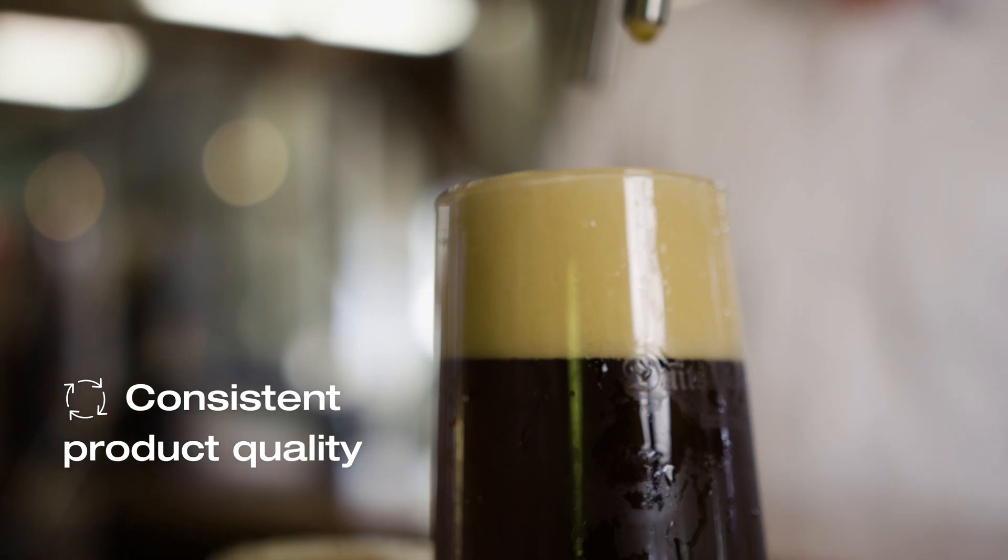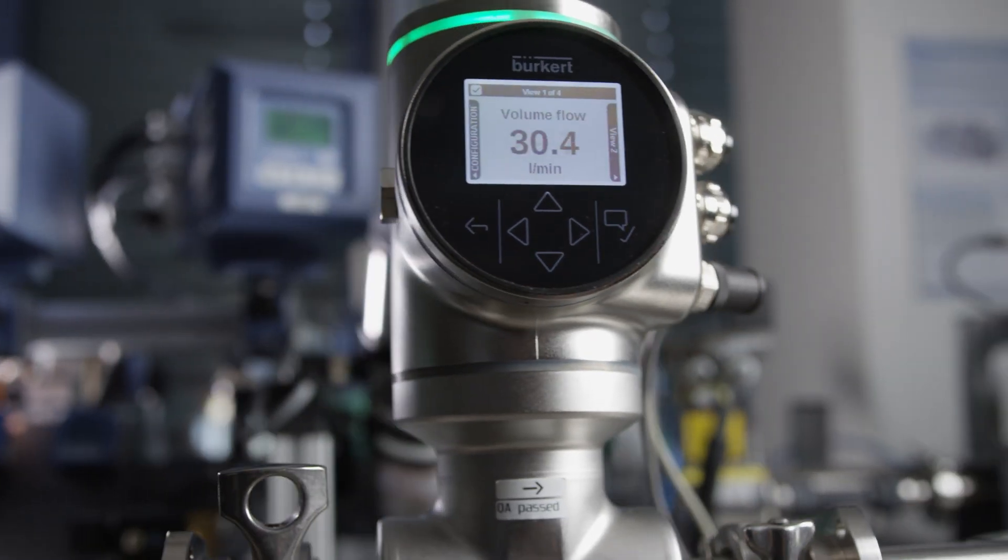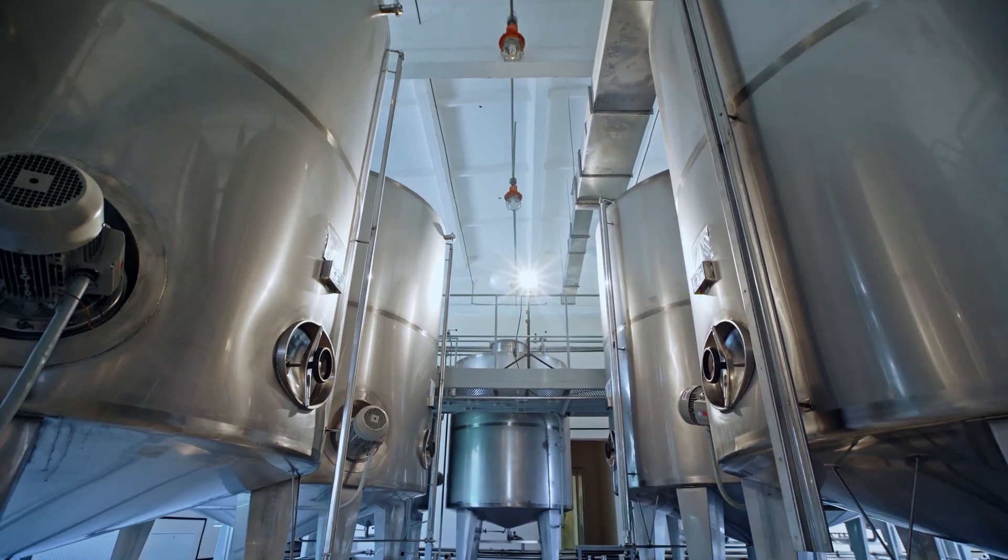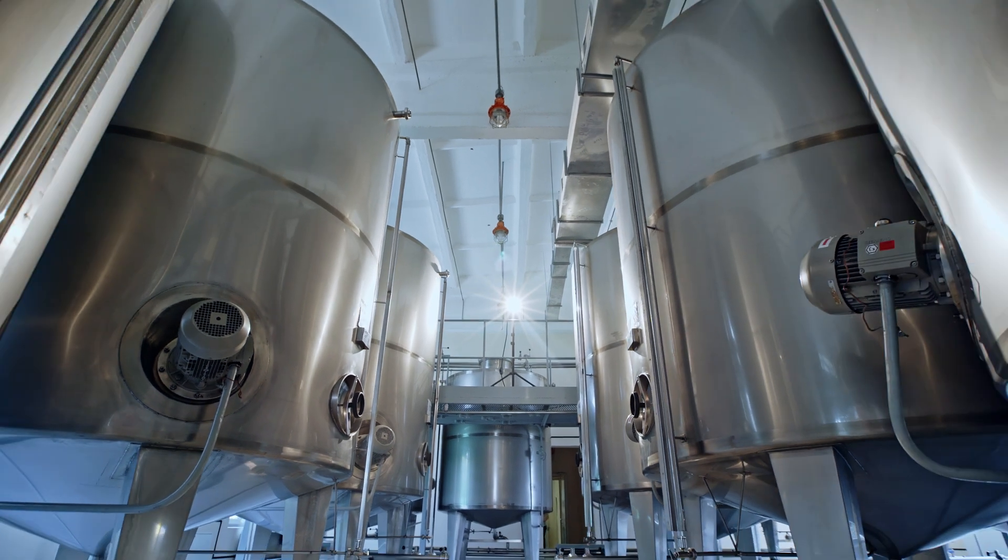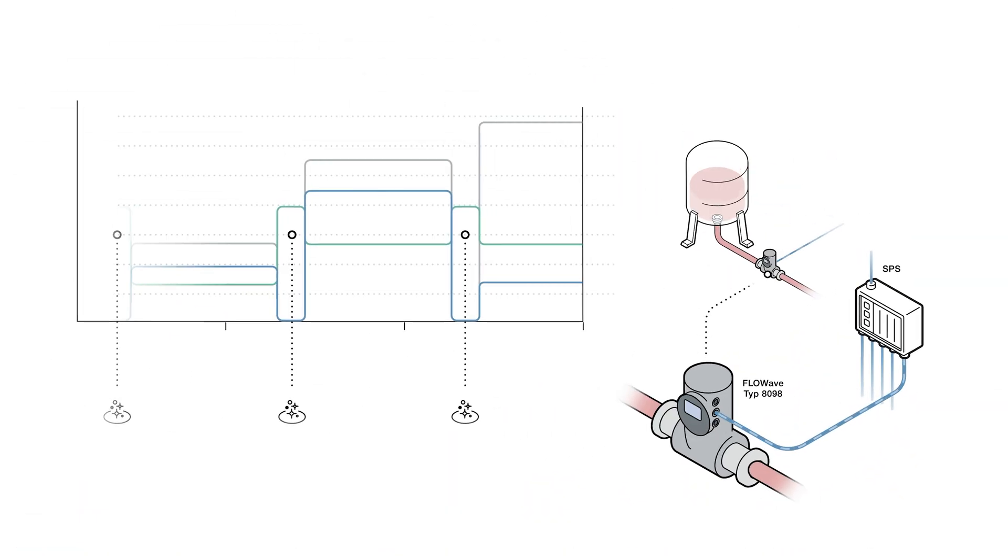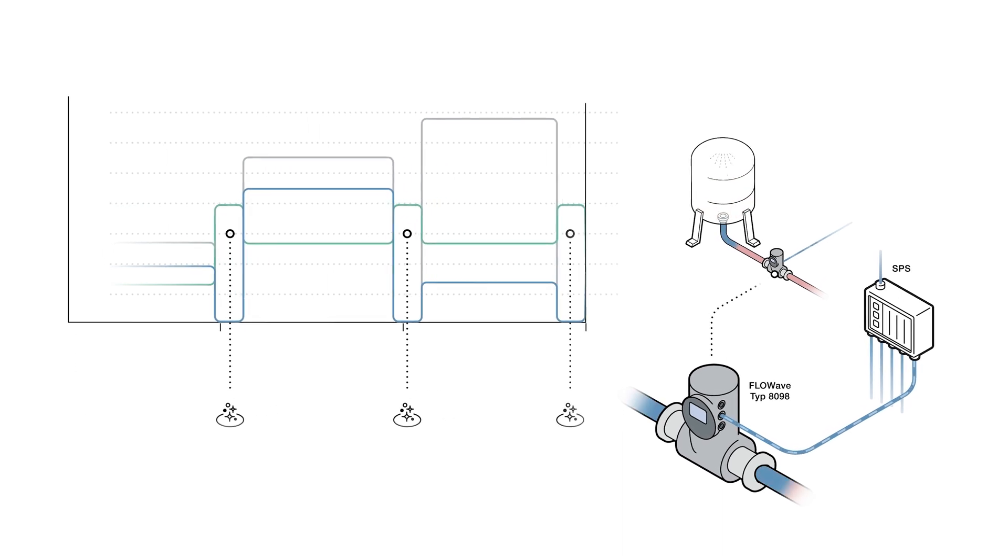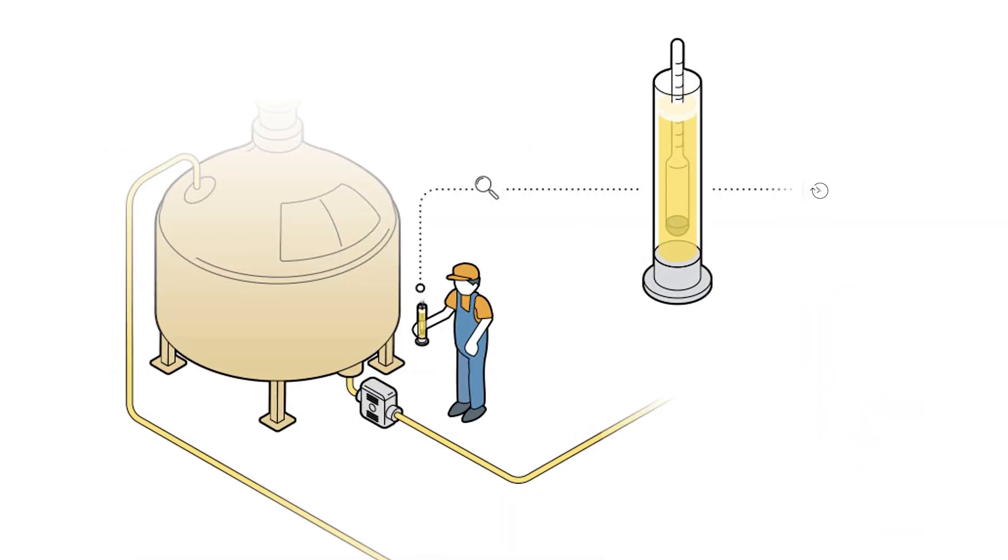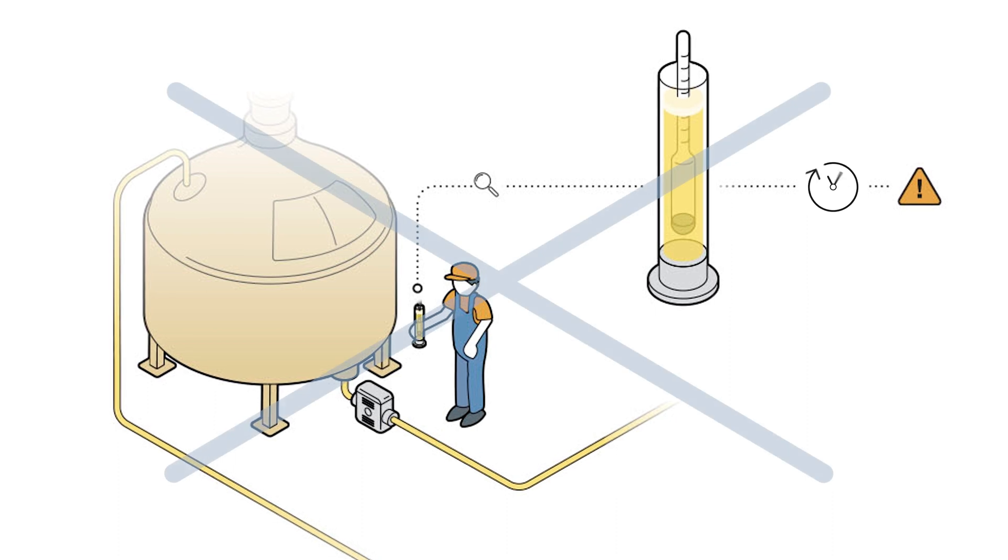Already during the brewing process, FlowWave measures the flow rate and original gravity during transport from one container to the next. This automated and continuous measuring process ensures constantly high process reliability, as well as reduced media losses, and makes manual sampling obsolete.